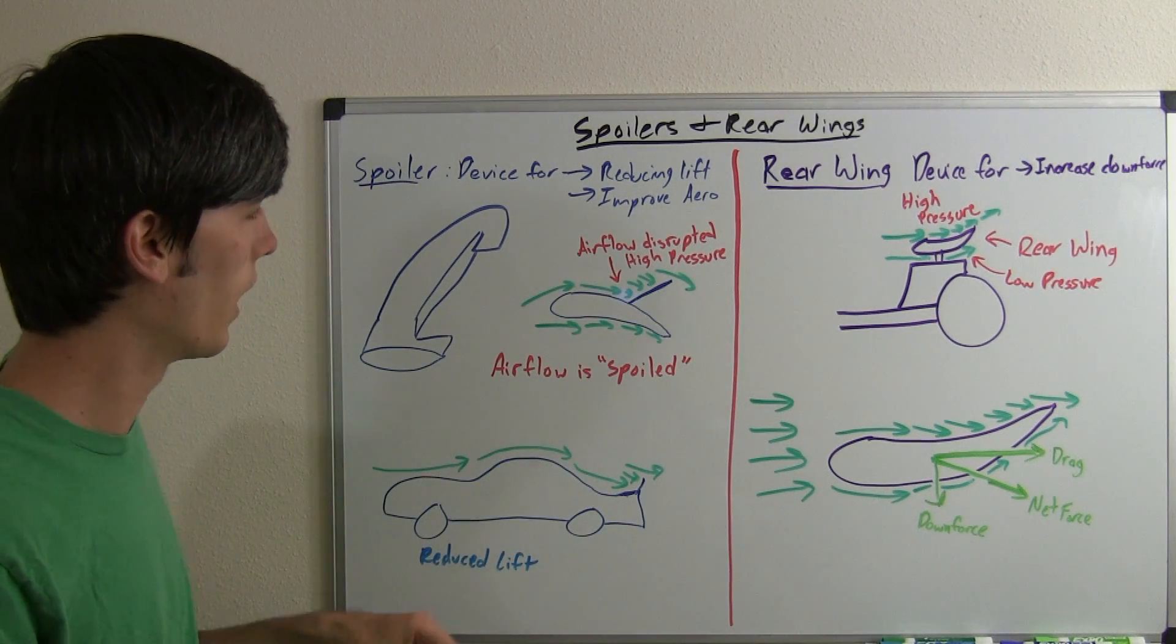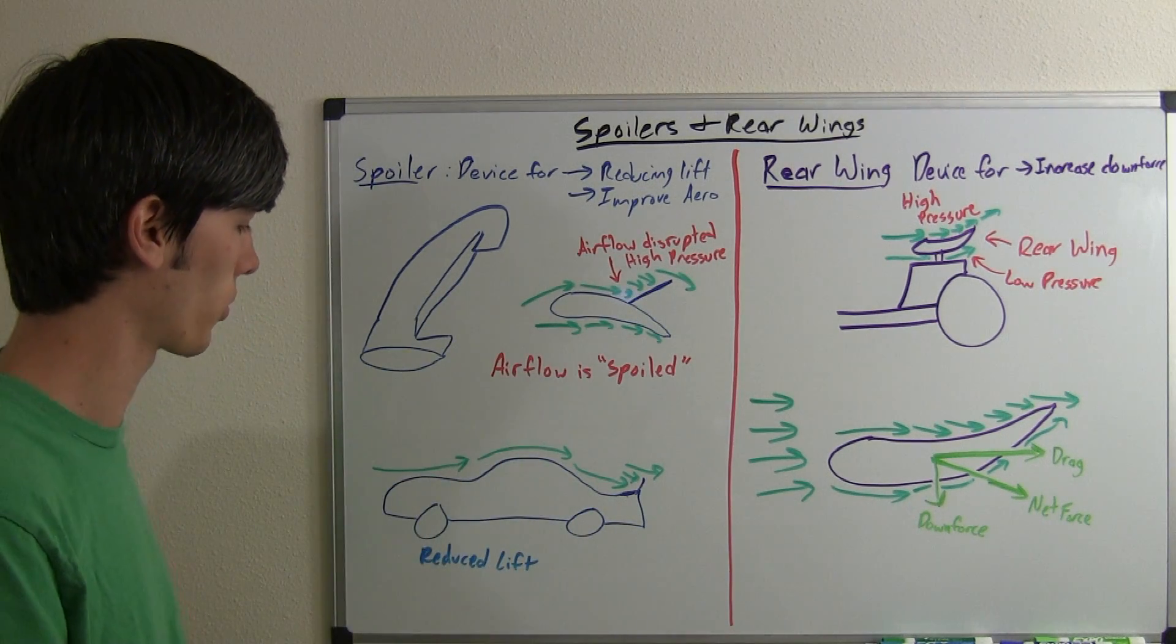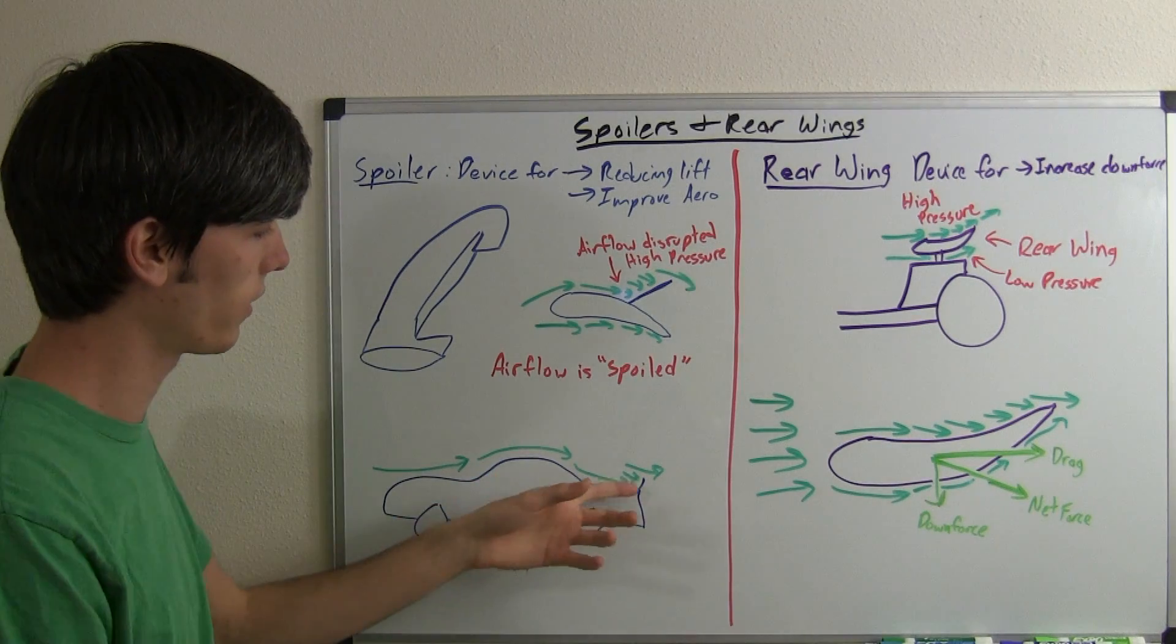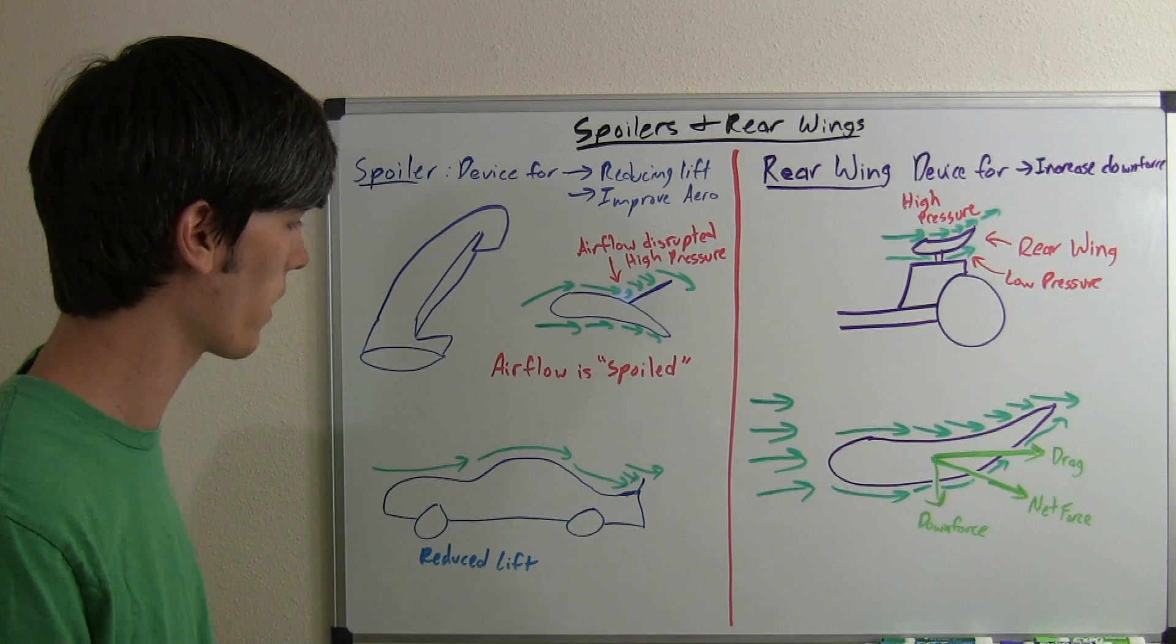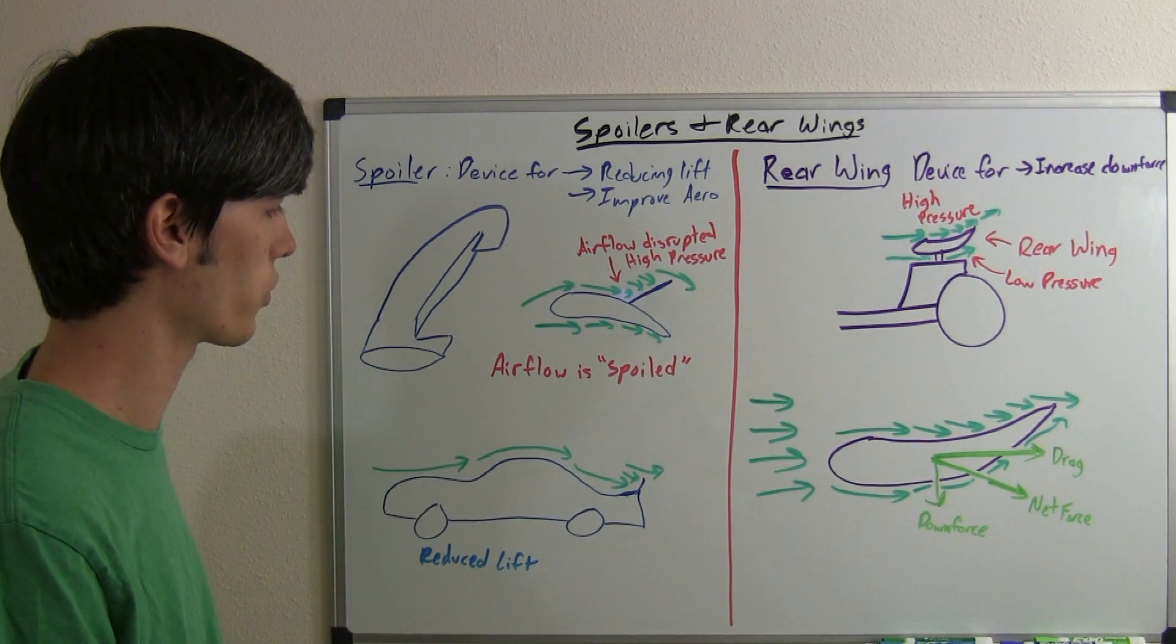So you're going to be reducing the lift and that's basically what a spoiler is for. So on a car when you've got that rear spoiler on the back, basically all that's doing is just trying to reduce lift.